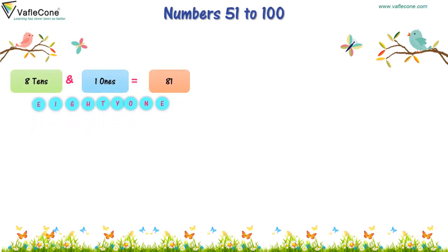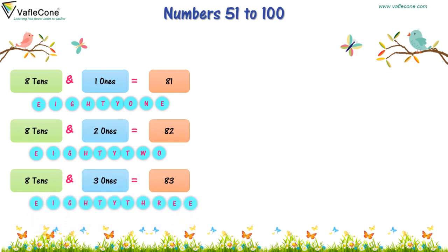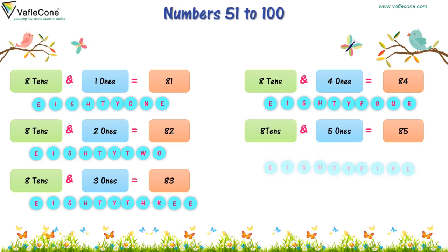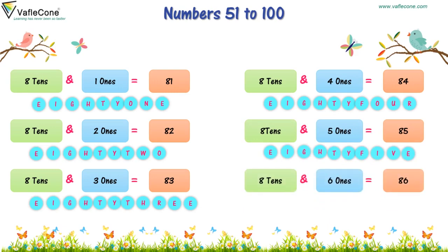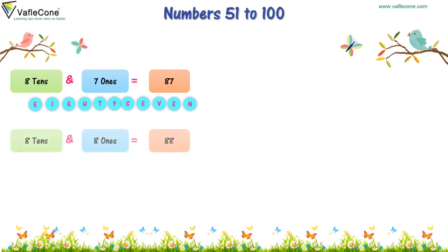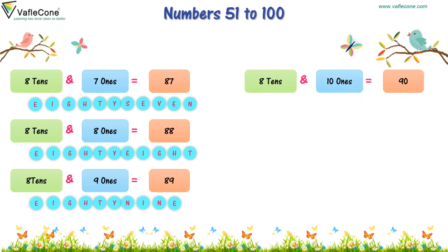8 tens and 1 one is equal to 81. 8 tens and 2 ones is equal to 82. 8 tens and 3 ones is equal to 83. 8 tens and 4 ones is equal to 84. 8 tens and 5 ones is equal to 85. 8 tens and 6 ones is equal to 86. 8 tens and 7 ones is equal to 87. 8 tens and 8 ones is equal to 88. 8 tens and 9 ones is equal to 89. 8 tens and 10 ones is equal to 90, or 9 tens is equal to 90.